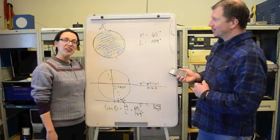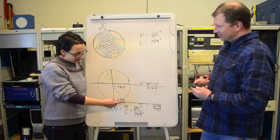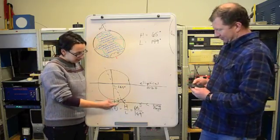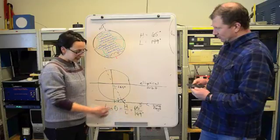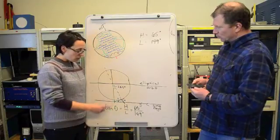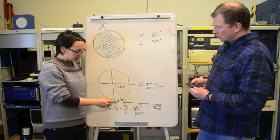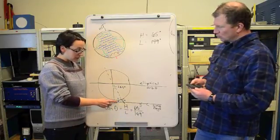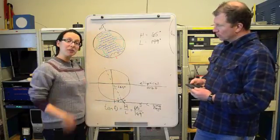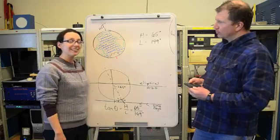So there you have it. By measuring my height and my shadow length and finding the tangent of it, we can prove that the Earth is tilted 23.5 degrees.